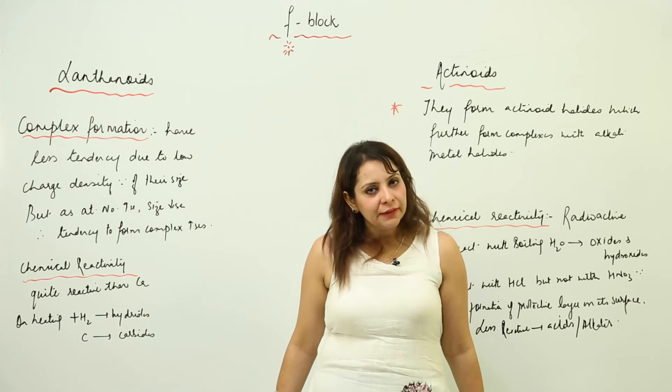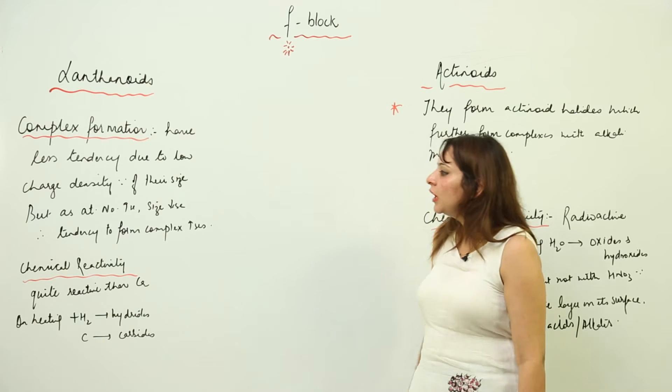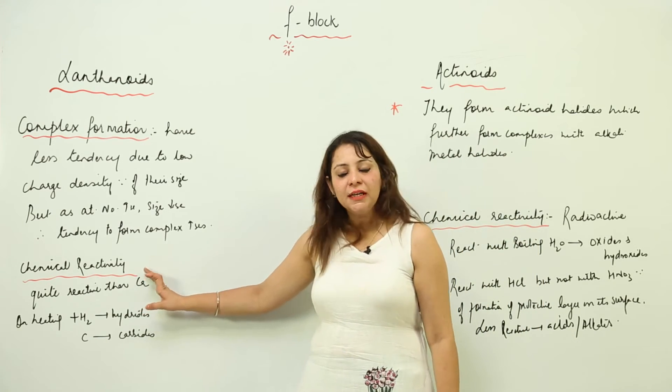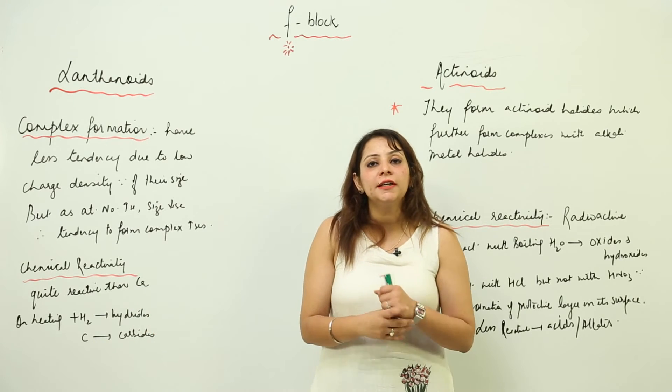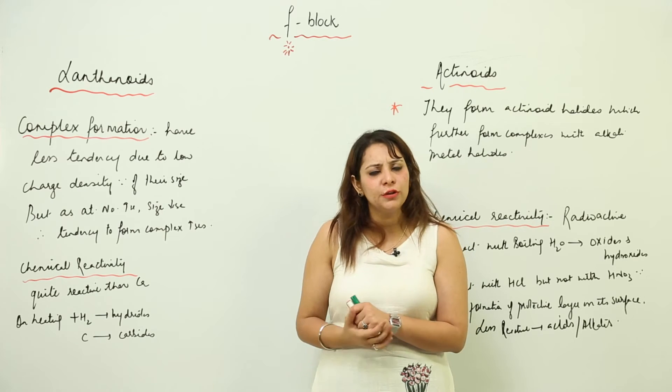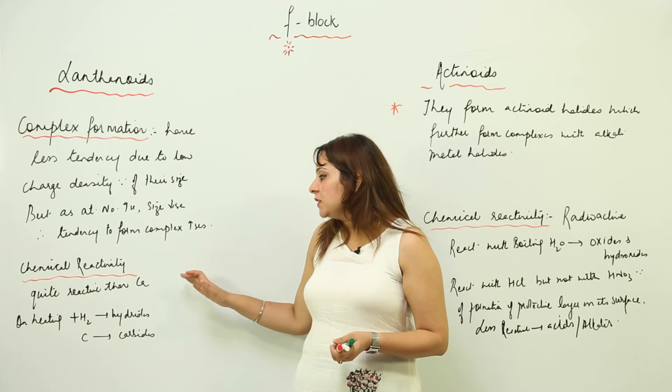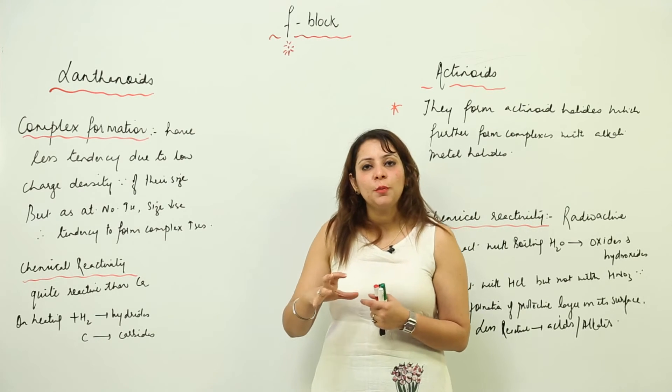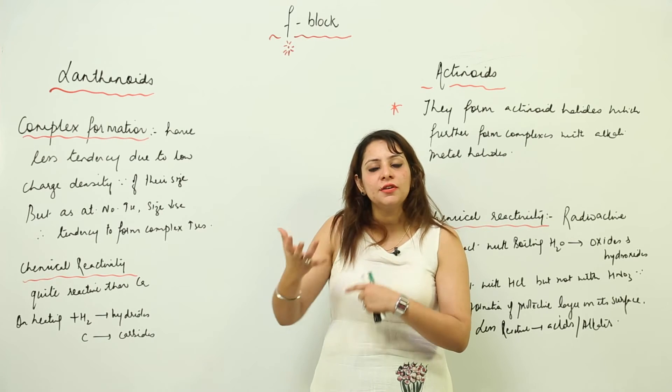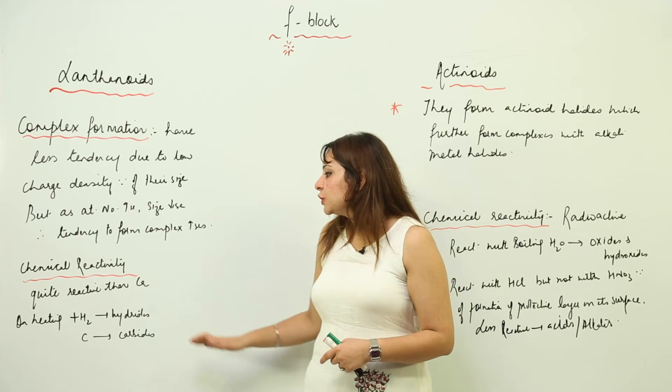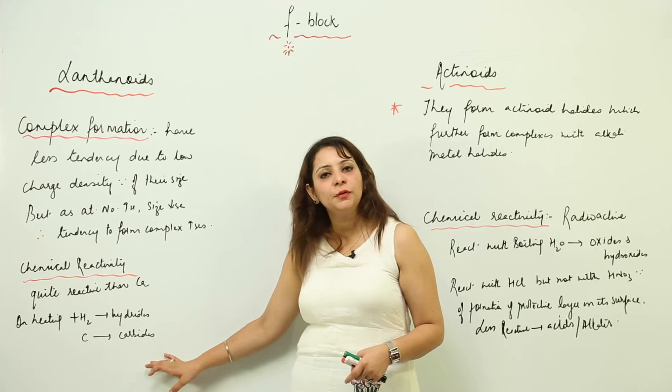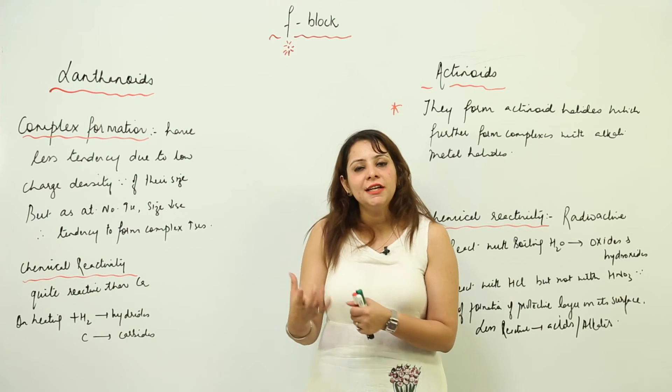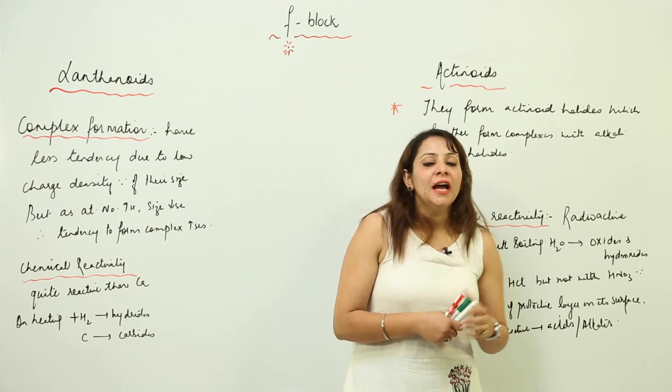Next is chemical reactivity. Lanthanides are quite reactive, more than calcium, but their chemical properties are mostly similar to calcium ones. But due to lanthanide contraction, their properties somehow get changed and start resembling aluminum also. They react with hydrogen forming hydrides, carbon forming carbides, and they also get tarnished on exposure to air.